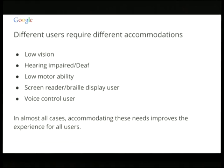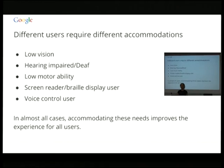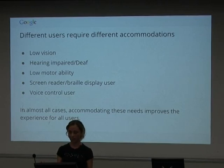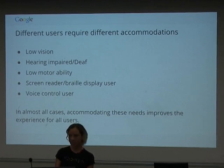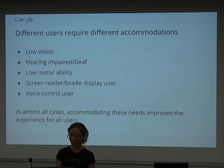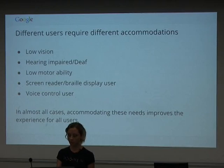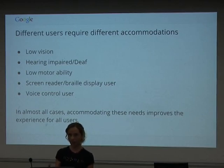When we talk about accessibility, it's a fairly broad spectrum and different users require different accommodations. We have low vision users — pretty much all of us once we get past about 40 or 50. Hearing impaired or deaf — I'm actually hearing impaired — may need things like subtitles or text alternatives to audio-only speech outputs. Low motorability users may be unable to use a mouse or keyboard very well, requiring certain accommodations. Screen reader or braille display users may be completely blind or have very poor vision.